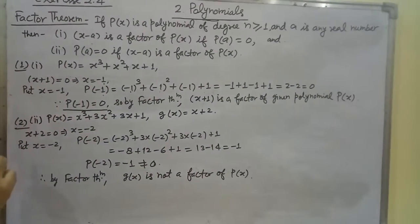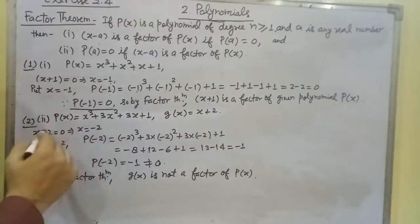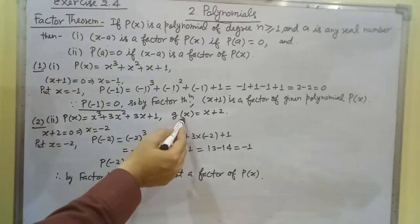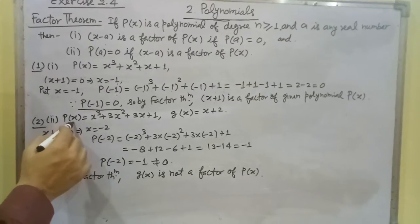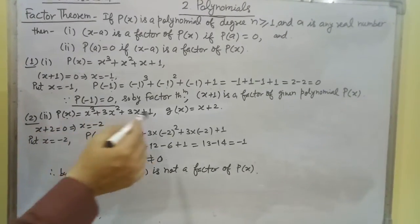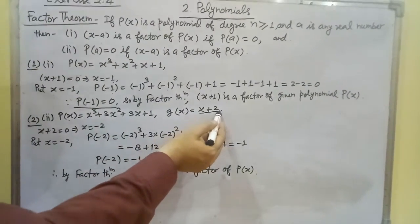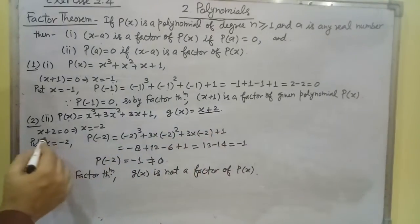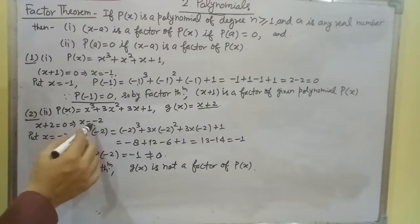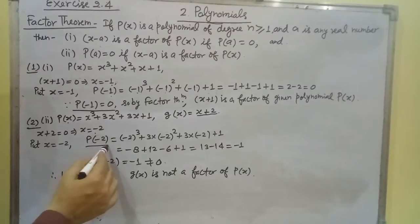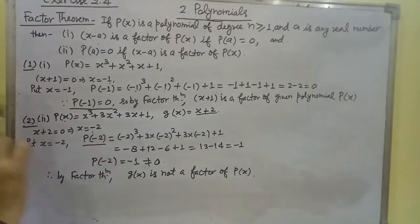Similarly, for the second question we have P(x) and G(x). We check if G(x) is a factor of P(x). Setting x plus 2 equal to 0 gives x equal to minus 2. We need to check if P(-2) equals 0; if yes, G(x) is a factor of P(x), otherwise it is not.